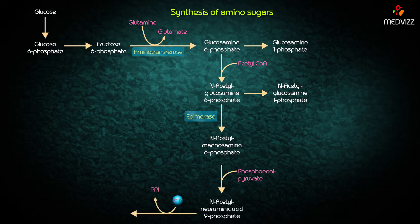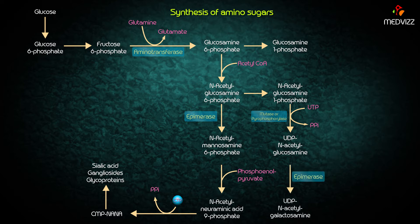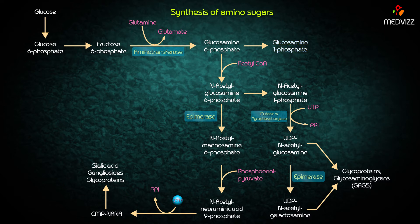N-acetylmannosamine-6-phosphate reacts with phosphoenolpyruvate to form N-acetylneuraminic acid-9-phosphate, which is ultimately used for the synthesis of sialic acid, gangliosides, and glycoproteins. The active form, UDP-N-acetylglucosamine, is formed from N-acetylglucosamine-1-phosphate by the enzymes mutase and pyrophosphorylase. UDP-N-acetylglucosamine is then epimerized to UDP-N-acetylgalactosamine. Both products are used for the synthesis of glycoproteins and glycosaminoglycans (GAGs). Glucosamine-1-phosphate is converted to UDP-glucosamine, also used for glycosaminoglycan synthesis.